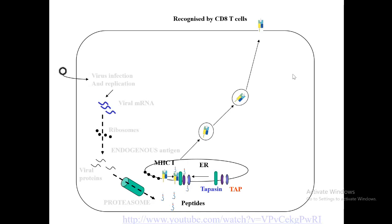Now that MHC1 is on the surface presenting the viral epitope, it interacts with CD8 cells. An activated CD8 cell that has interacted with the antigen in the lymph node makes its way to the infected cell. One issue is how does the CD8 cell know where to go? The infected cell starts to produce interferon, and the CD8 cells are attracted to that region through a process called chemotaxis. So the CD8 cell is able to track its way to the infected cell.